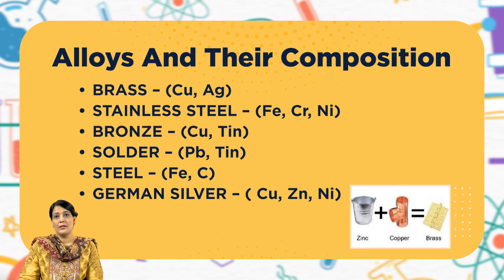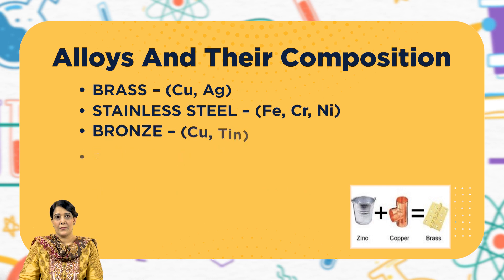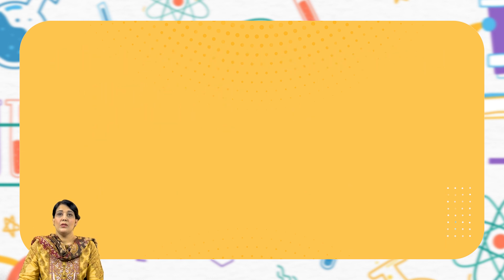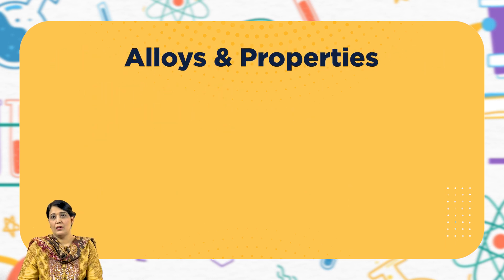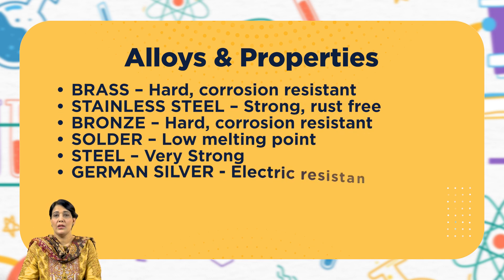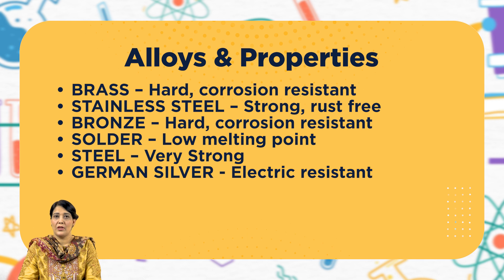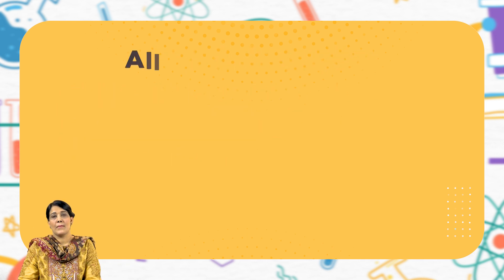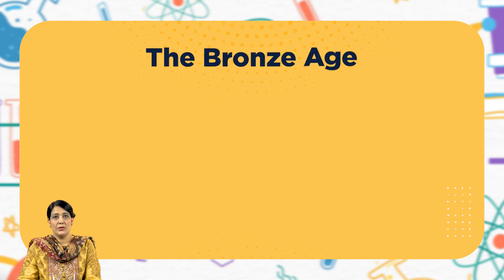Now let's look at the properties of the alloys. Brass is hard and corrosion resistant. Stainless steel is strong and rust free. Bronze is hard and corrosion resistant. Solder has a very low melting point. Steel is very strong. German silver has electrical resistance.